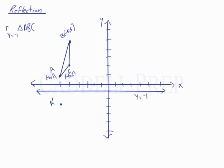C is 3 spots away from the line, so we have to go 3 spots below it. Then we end up with C prime being right here.